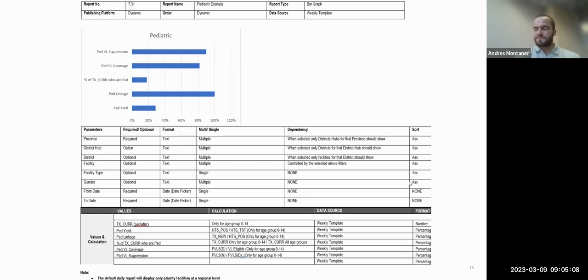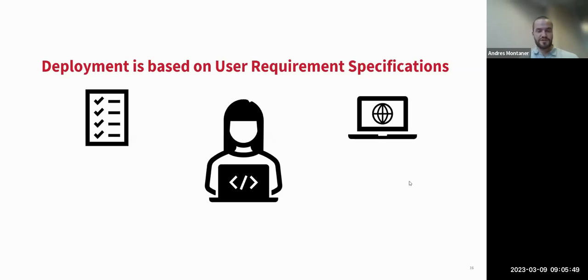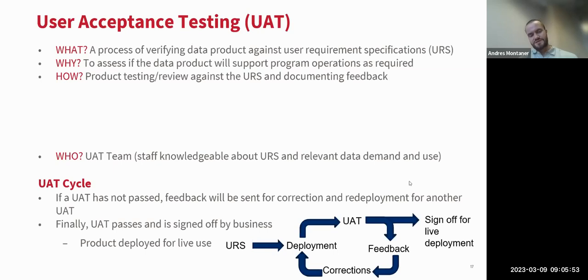A URS document is very handy — it can seem tedious, but taking the time to fill it out carefully prevents misunderstandings down the road. It serves as an instructions booklet to refer back to. If details are left out, you may end up asking for something you didn't actually document in the request. Include as much detail as possible to make sure you get what you're actually envisioning.